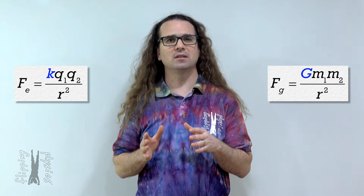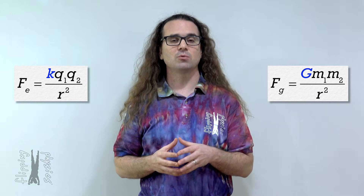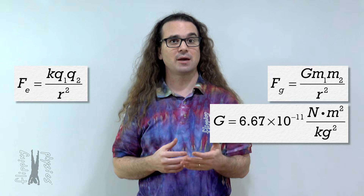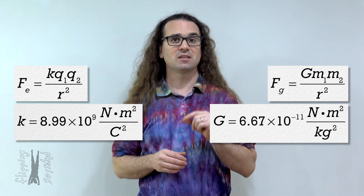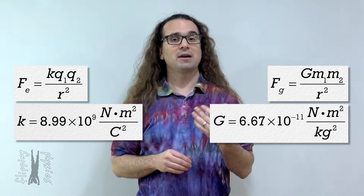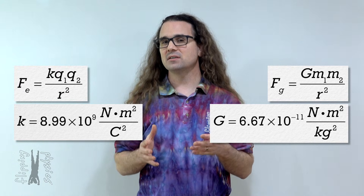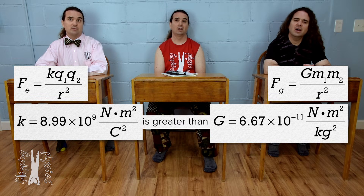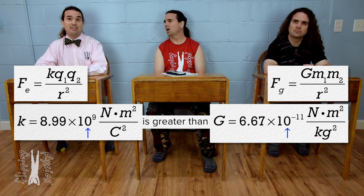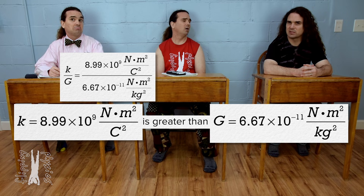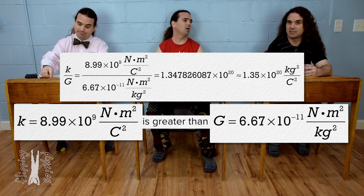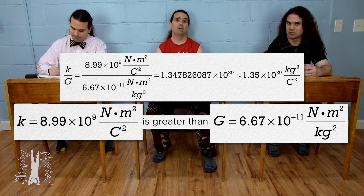The universal gravitational constant equals 6.67 times 10 to the negative 11 newtons times meters squared divided by kilograms squared. The Coulomb constant equals 8.99 times 10 to the 9th newtons times meters squared divided by Coulombs squared. The Coulomb constant is larger — 8.99 times 10 to the 9th divided by 6.67 times 10 to the negative 11th means the Coulomb constant is 1.35 times 10 to the 20th power larger than the universal gravitational constant.